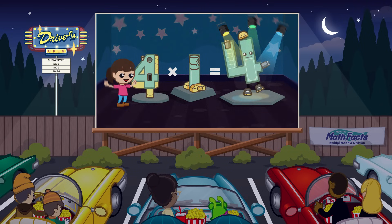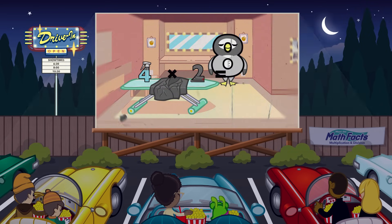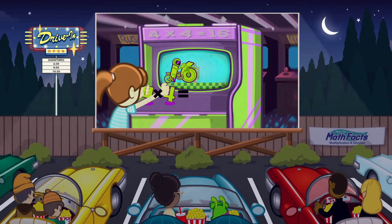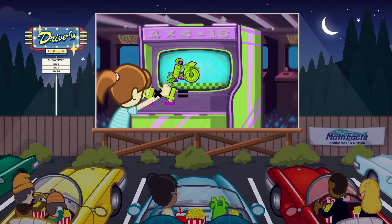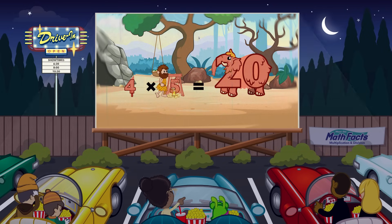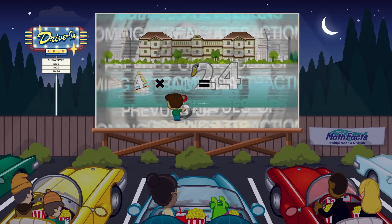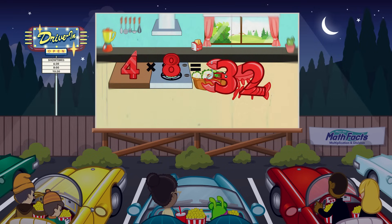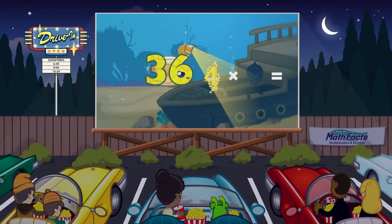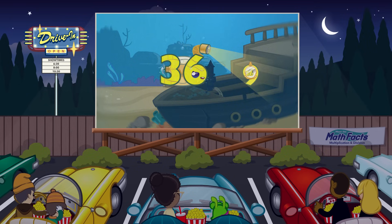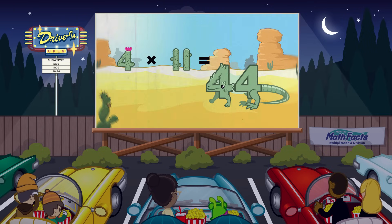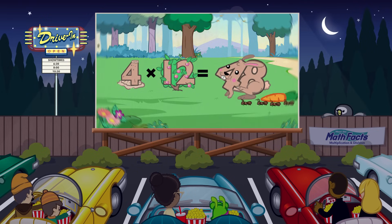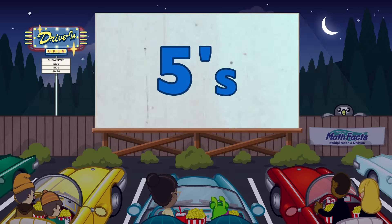4 times 1 equals 4. 4 times 2 equals 8. 4 times 3 equals 12. 4 times 4 equals 16. 4 times 5 equals 20. 4 times 6 equals 24. 4 times 7 equals 28. 4 times 8 equals 32. 4 times 9 equals 36. 4 times 10 equals 40. 4 times 11 equals 44. 4 times 12 equals 48. Now let's try fives!